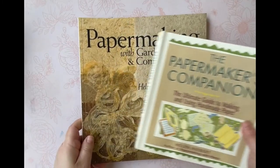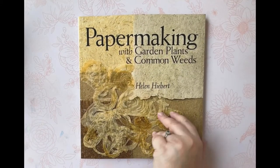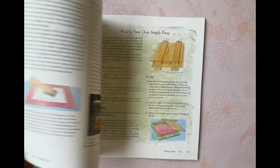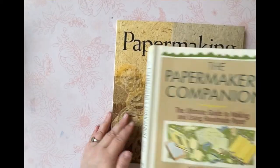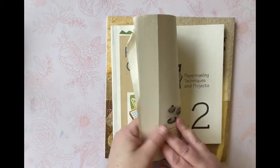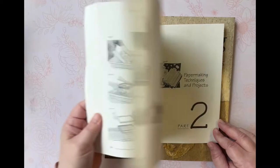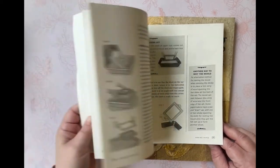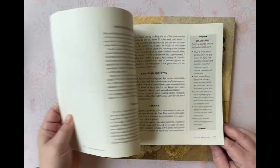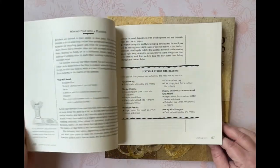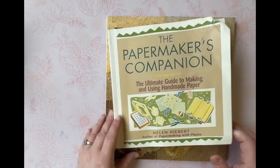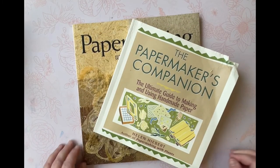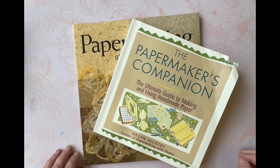To start my own paper making journey I found two resources that were especially helpful. The first is Papermaking with Garden Plants and the second is The Papermaker's Companion. Both of these sources had a plethora of information on different techniques, tools, materials, tips, and the history of paper making. So if you are able I would highly recommend checking these books out of your local library to learn more about paper making from the technical aspect.